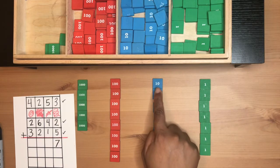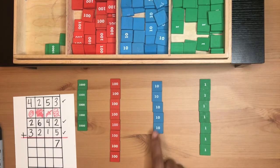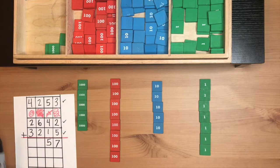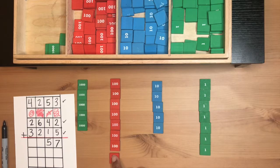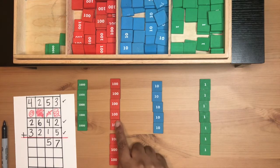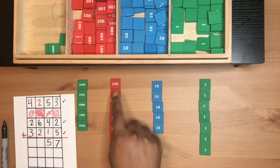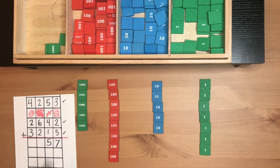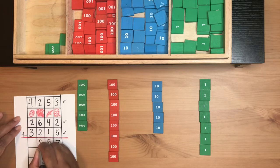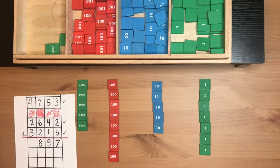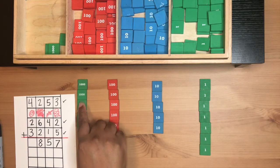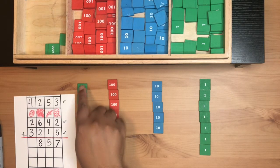Now I move on to the tens: 1-10, 2-10, 3-10, 4-10, 5-10. The hundreds: 1-100, 2-100, 3-100, 4-100, 5-100, 6-100, 7-100, 8-100. The thousands: 1-1000, 2-1000, 3-1000, 4-1000, 5-1000.